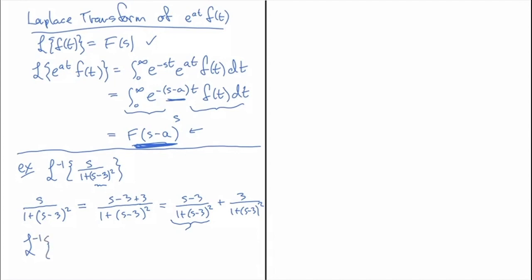- so the inverse transform of (s minus 3) over (1 plus (s minus 3) squared) - that's going to be equal to e to the three t times the cosine of t.